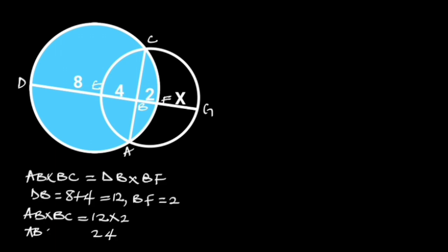So AB times BC is equal to 24. Let this be equation 1.